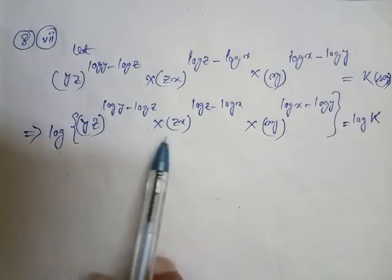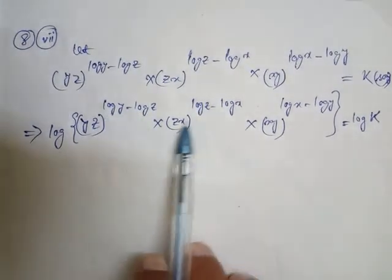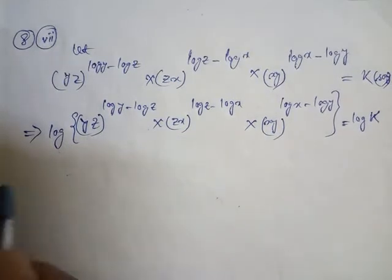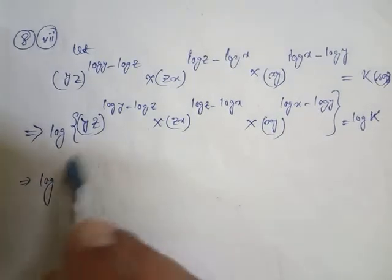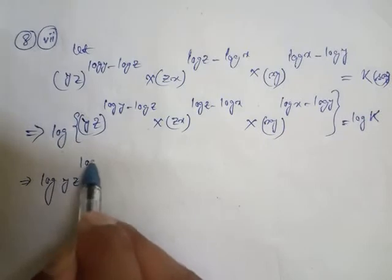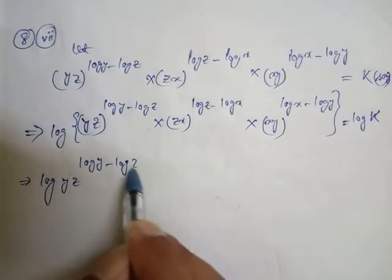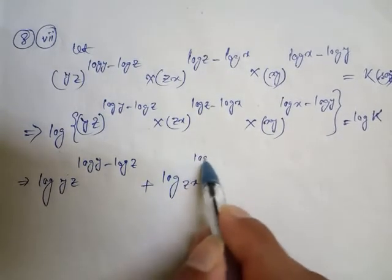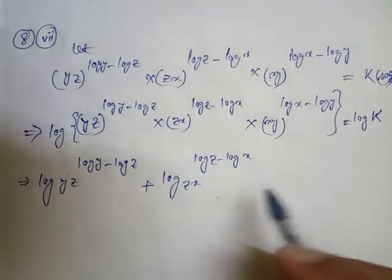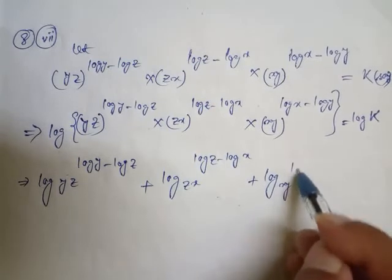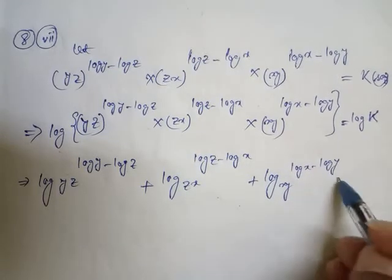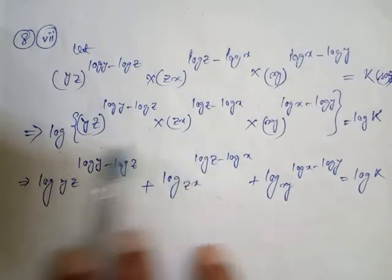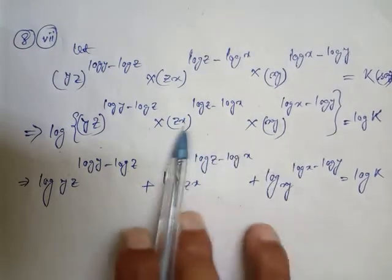Now, using the property that log(m·n) means log m plus log n, we split this up. So: log(y·z) times (log y minus log z), plus log(z·x) times (log z minus log x), plus log(x·y) times (log x minus log y), equals log k. This is directly applying the log m·n = log m + log n formula.